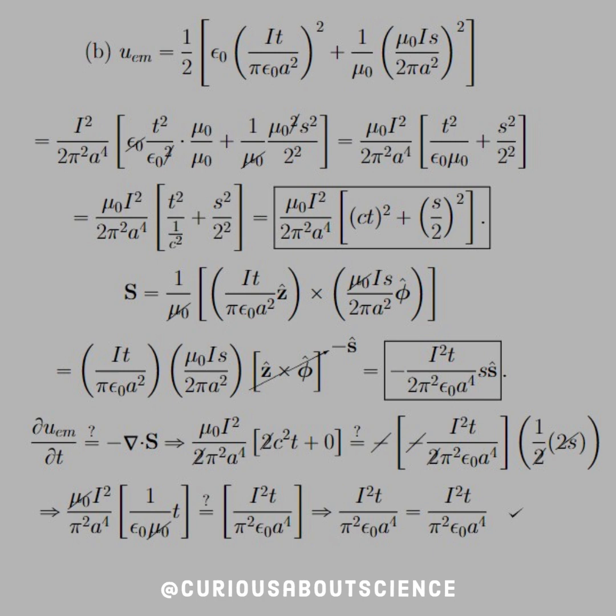Now, in a similar vein, what we need to do is find the Poynting vector, which is just the cross product of E and B divided by mu naught. And so we see that we can factor out the E constants and the B constants. We're left with Z cross phi. Remember what I said about the directionality of the cross products? We know that phi cross Z gives us S, so we can use the anti-commutativity of the cross product to put the negative sign in there. Combine everything that we need, and we see that we get I squared T over 2 pi squared epsilon A to the 4th S, S hat negative, of course.